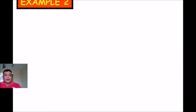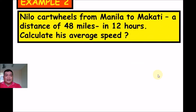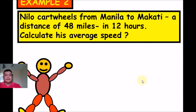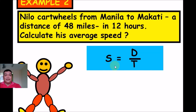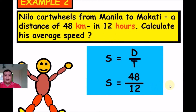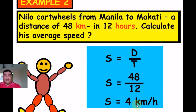Example 2: Nilo cycles from Manila to Makati, a distance of 48 miles, in 12 hours. Calculate his average speed. Speed = Distance ÷ Time. Distance is 48 miles and time is 12 hours. Divide 48 ÷ 12 = 4. The average speed is 4 miles per hour.